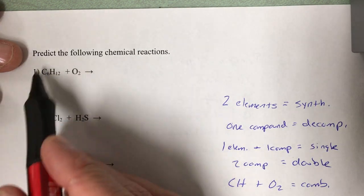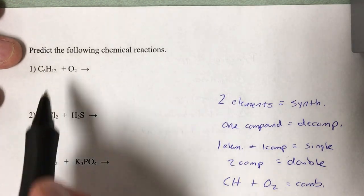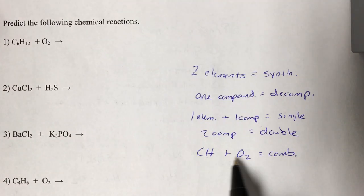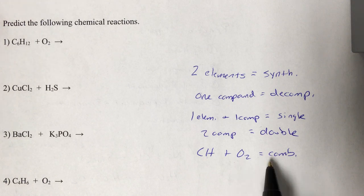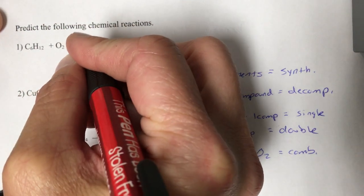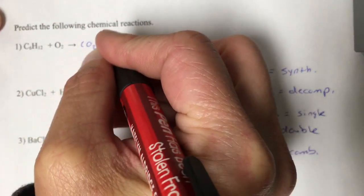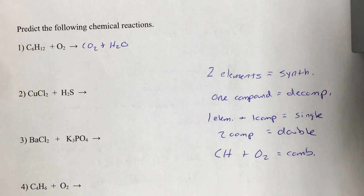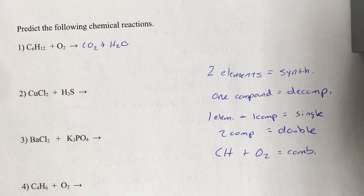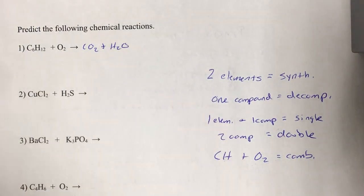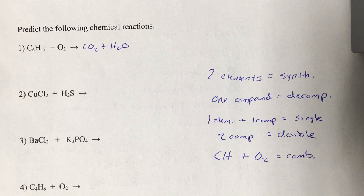We look for the pattern here — C-something, H-something plus O2. That's a combustion reaction. In combustion, write down carbon dioxide and water, call it a day, and move on to the next. Those are some of the easiest ones to predict, as long as you recognize that the hydrocarbon — C-something, H-something plus oxygen — is a combustion reaction. Nothing really to figure out. Just write it down.